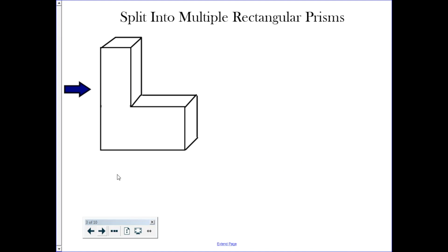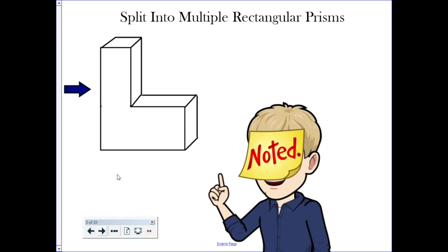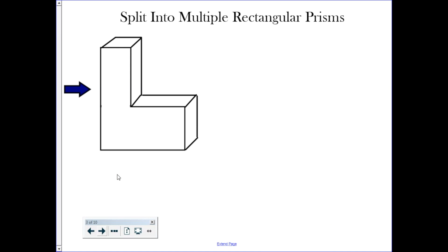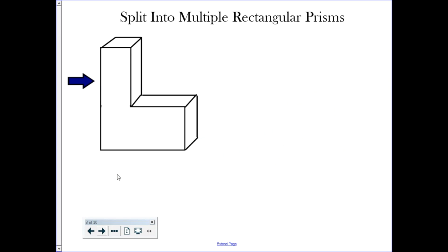In 5th grade, we focus almost exclusively on rectangular prisms. You could have composite shapes with any other shape, but in 5th grade we're going to be looking at rectangular prisms. The first thing you do when you have a composite shape is you need to break it down into shapes we do know how to find the volume of, because there is no formula to define the volume of this entire shape.